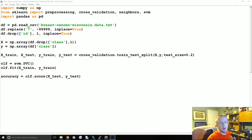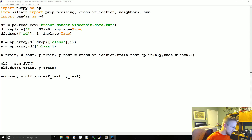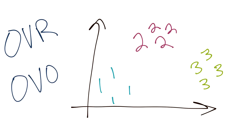We're going to talk about classifying when you have more than two groups. Generally there are two methodologies you might use when you have more than two groups to classify into. The support vector machine is simply a binary classifier, so it can only separate two groups at a time, or per decision boundary.